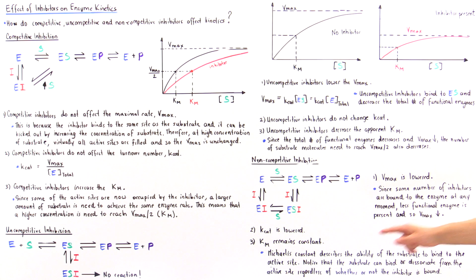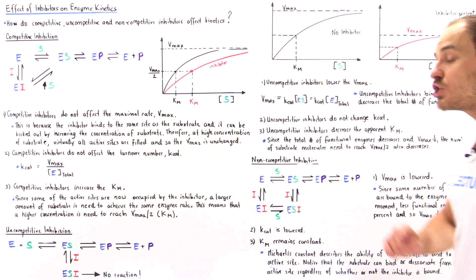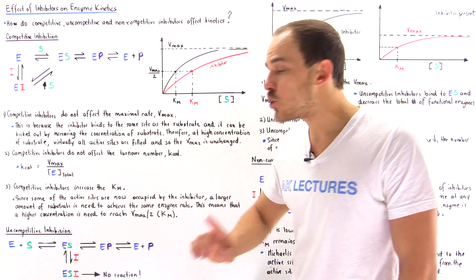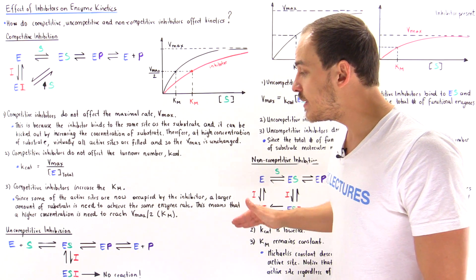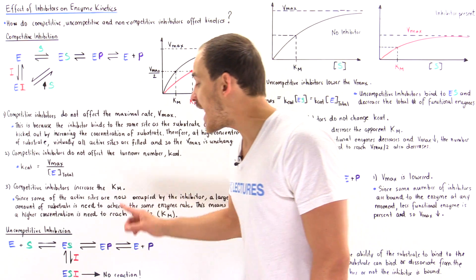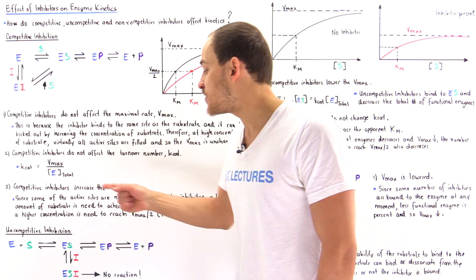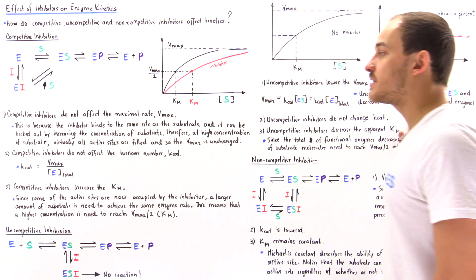The Michaelis Constant describes the ability of the substrate to bind to the active site, and notice that the substrate can bind or dissociate from the active site regardless of whether or not that inhibitor is bound. This simply was not true for the case of uncompetitive inhibition. In uncompetitive inhibition, once the inhibitor binds onto the enzyme-substrate complex, it blocks that substrate from leaving the active site, which increases the affinity of the substrate for the active site and decreases the apparent K-M value.